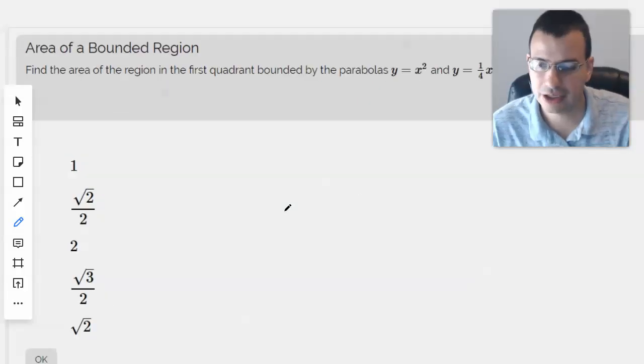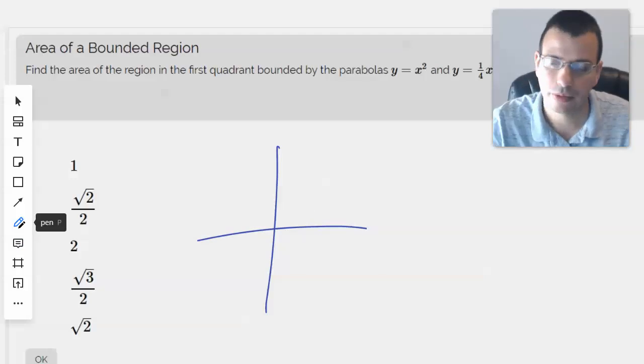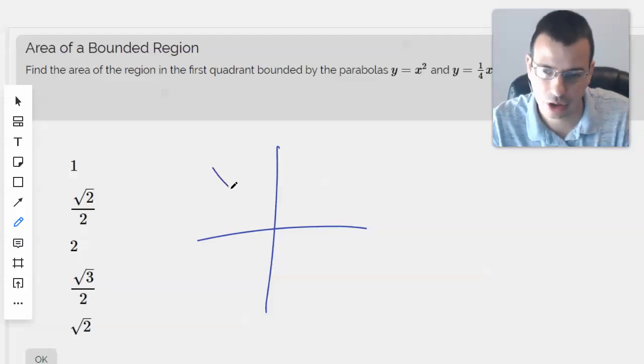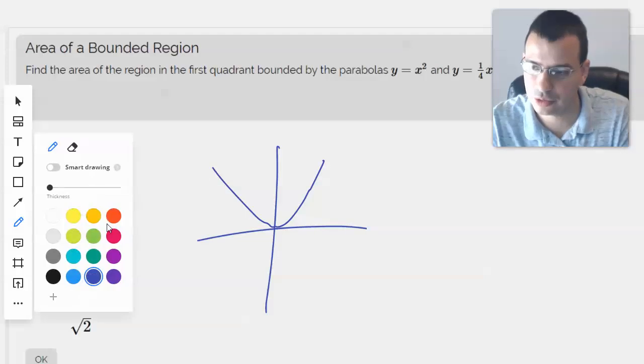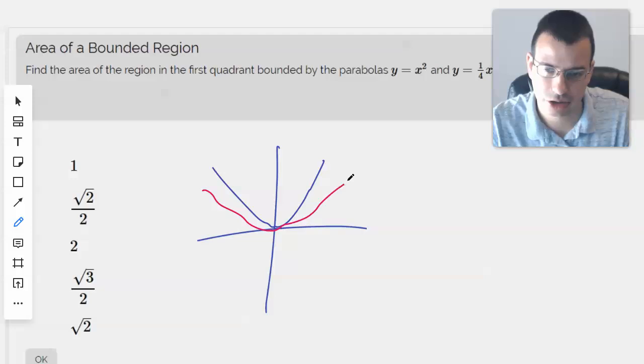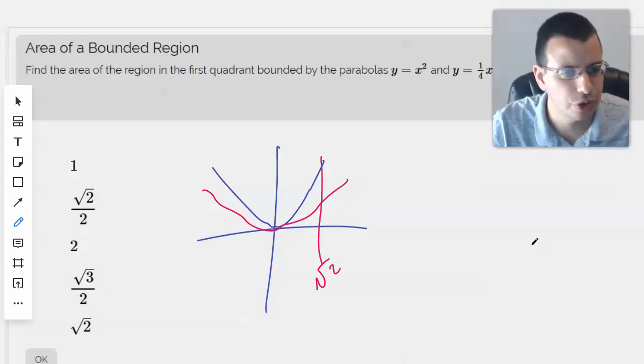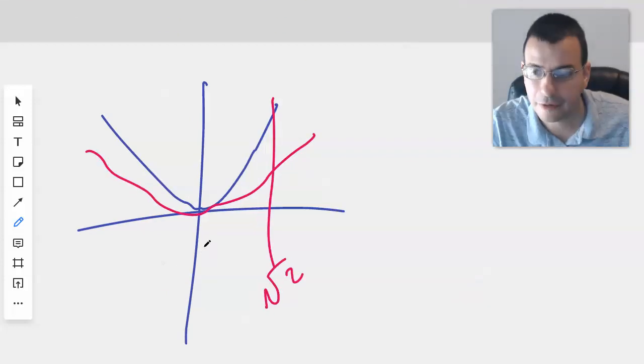Okay, so the idea here is we have a coordinate plane like so, and we have two parabolas, one kind of like this, and then one, which has to be of course a different color, kind of like this. And we're given a value, square root of two, right here.